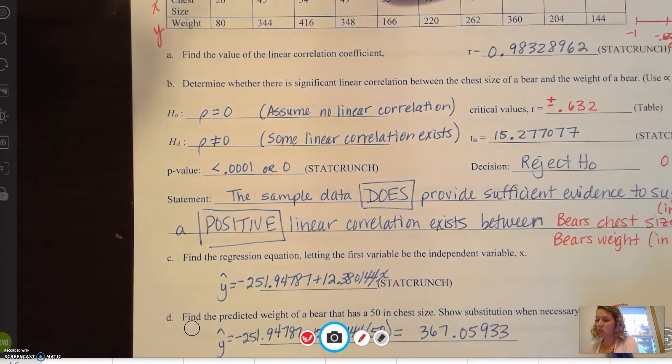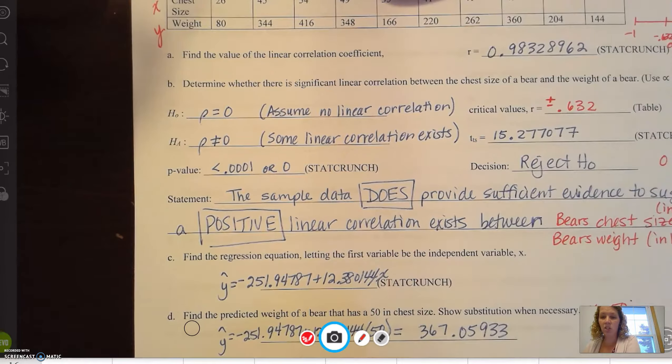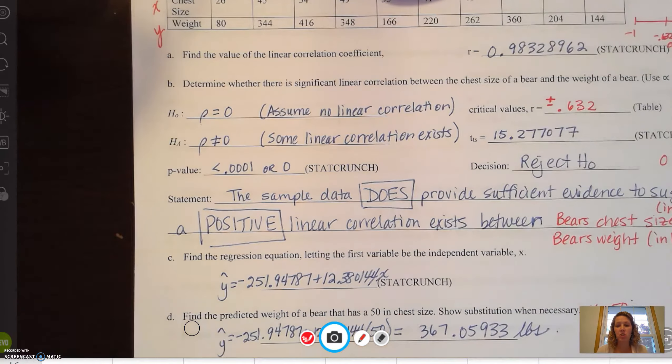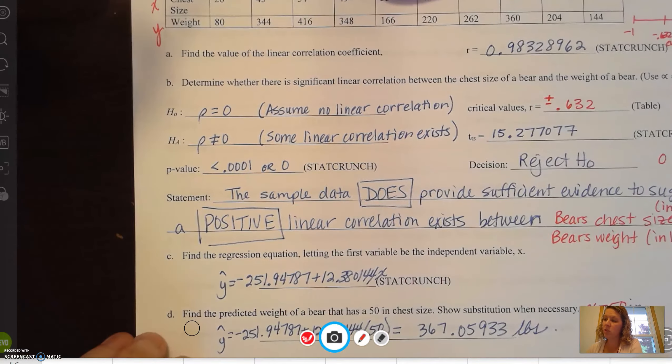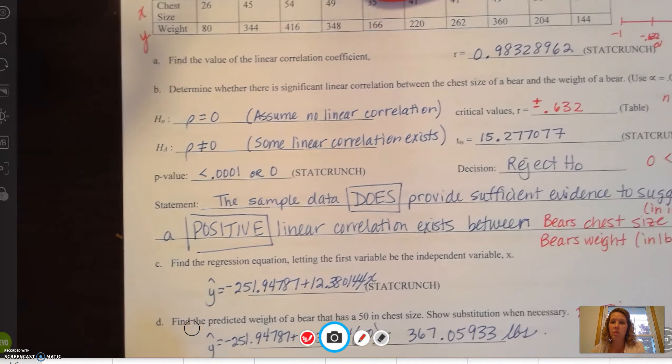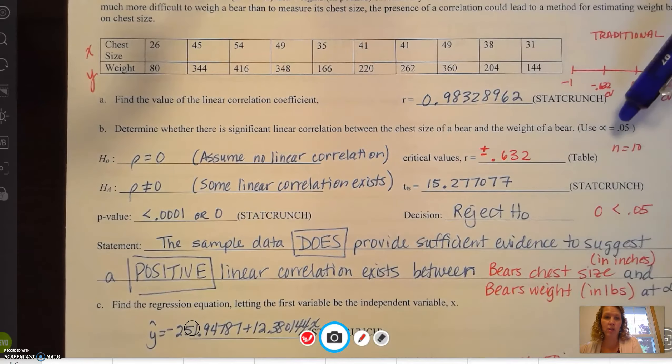Don't forget our units. Because x was the bear's chest size, so a bear that has 50 inch chest size will have a weight of 367, roughly, pounds. The units are just as important in these problems. You can use the traditional method or the p-value method to perform correlation and regression for this bear example.